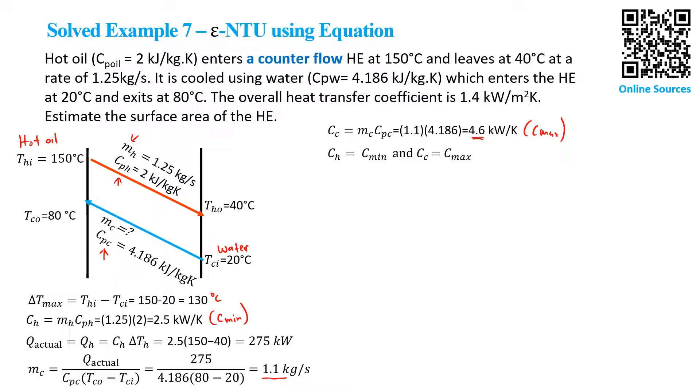Next, we calculate the capacity ratio, which equals Cmin divided by Cmax. We find it's 0.54.